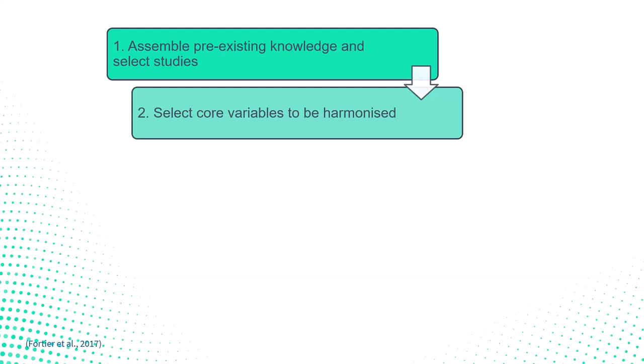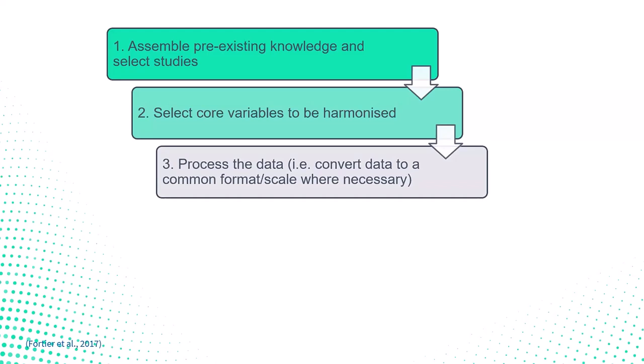Step two is selecting the core variables to be harmonised. You need very clear definitions of your research question and the variables you need to answer that question, and then confirm and document whether they're available in the studies you're looking at. Step three is processing the data — the real meat and potatoes of harmonisation. Develop a strategy for harmonising your data, which will likely involve some sort of data cleaning and recoding. Depending on the data, simple algorithms or transformations can often be applied.